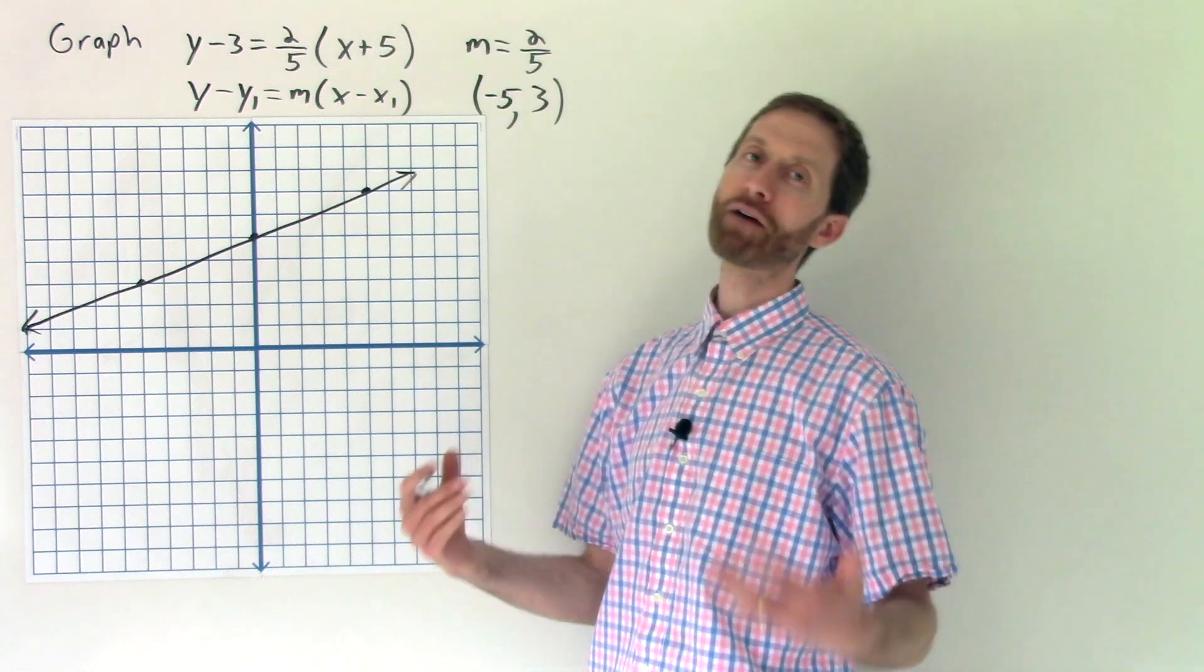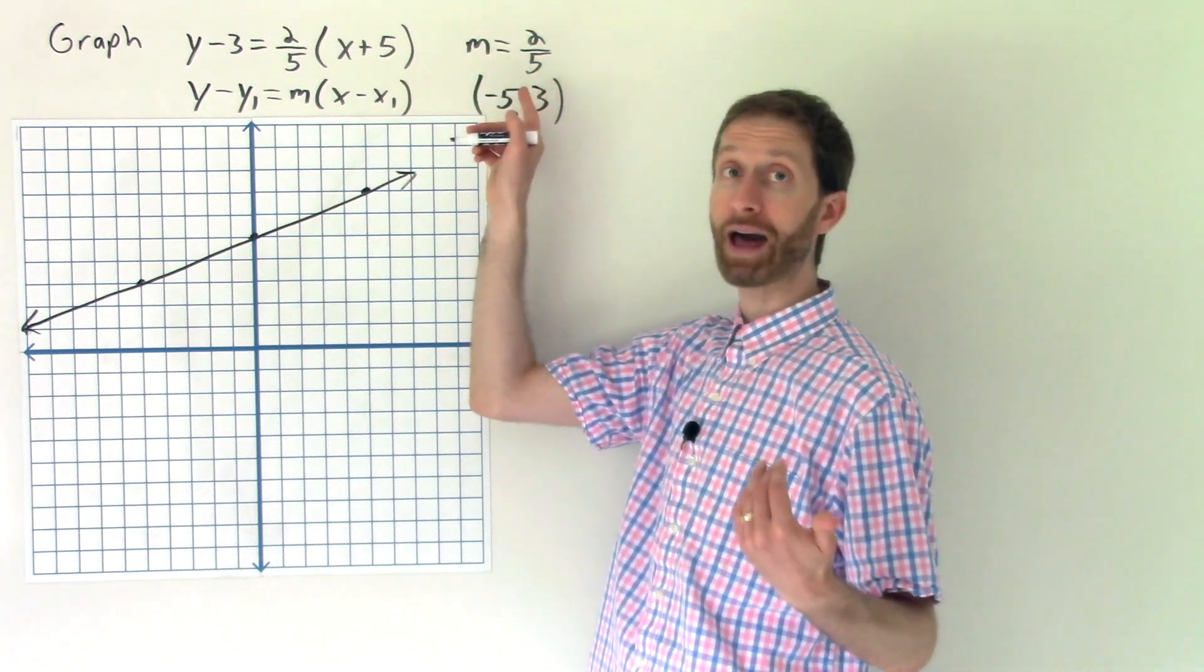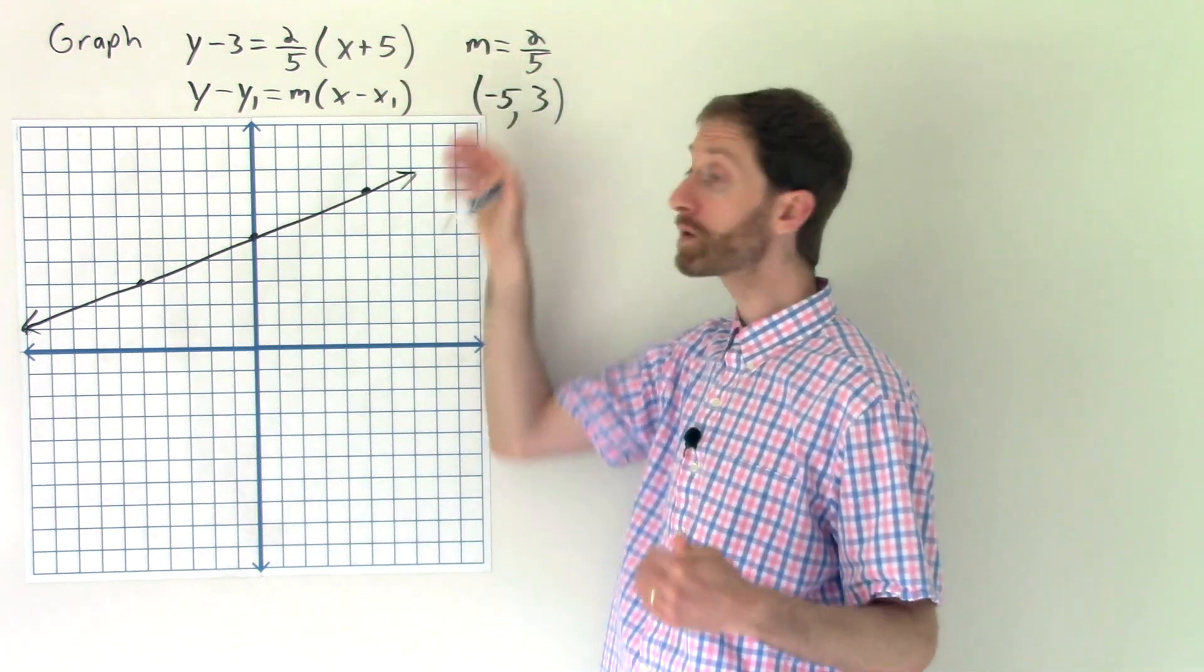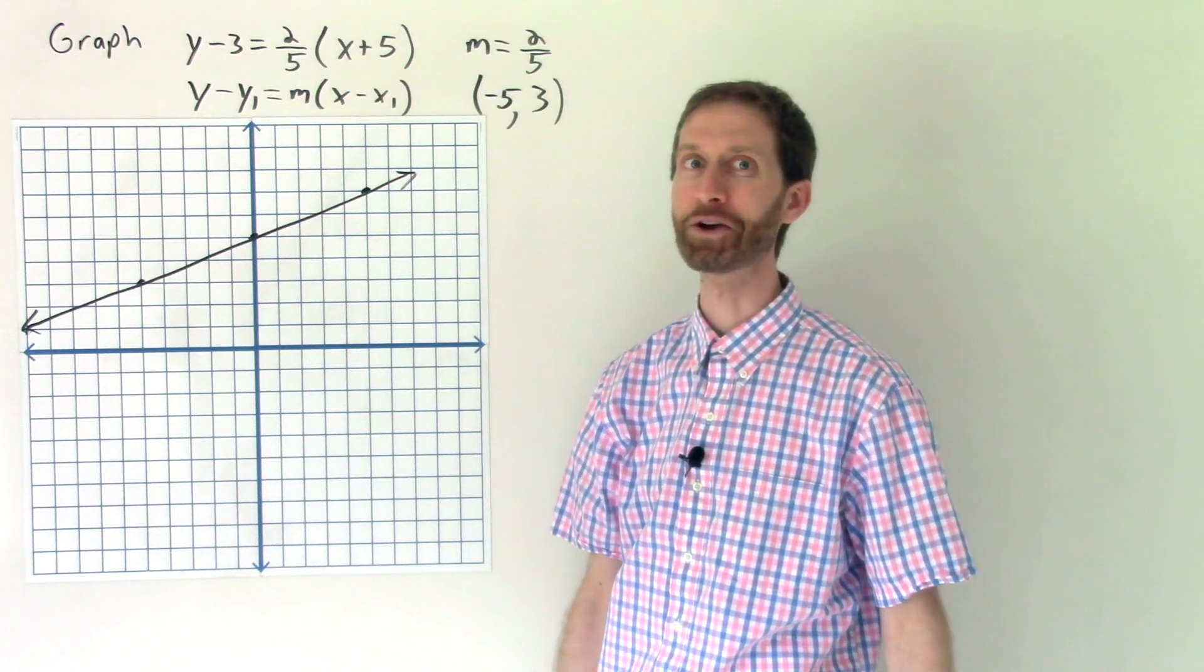Anyway, graphing point-slope form is easy as inventorying the information you have, writing it out, and then doing what that information tells you to do on the graph. See you in the next video, peeps.